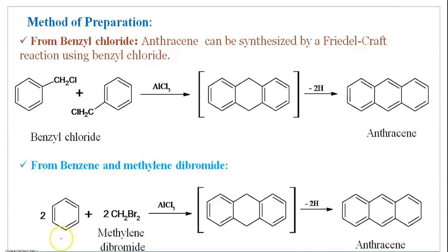The fourth method is the formation of Anthracene from benzene and methylene dibromide. Two molecules of benzene along with two molecules of methylene dibromide are heated in the presence of catalyst AlCl3, and then Anthracene is formed.